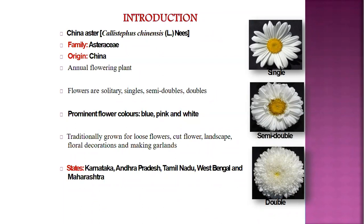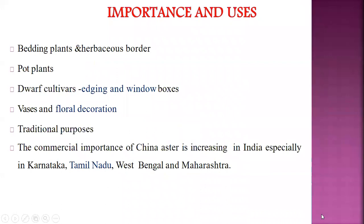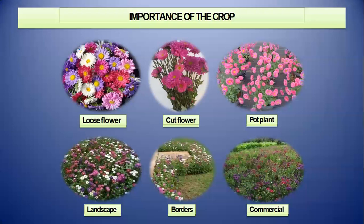There are some states which produce these flowers largely — Karnataka, Andhra Pradesh, Tamil Nadu, West Bengal and some parts of Maharashtra. It is a bedding plant and used as a herbaceous border. You can use them as pot plants. They are dwarf in size, so they can be used for aging. You can use them in window boxes, vases, floral decoration, traditional purposes — all the ceremonies we celebrate every year. The commercial importance of China Aster is increasing in India especially in Karnataka, Tamil Nadu, West Bengal and Maharashtra.